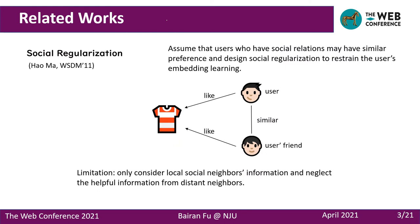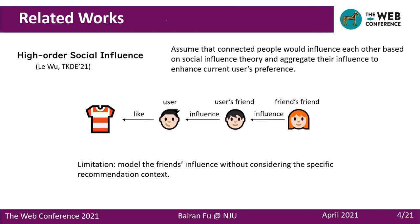To incorporate social relations into the recommender system, existing social-aware recommendation methods make several attempts in various ways. Social regularization methods assume that users who have social relations may have similar preferences. Thus, these methods consider social relations as a kind of social regularization to restrain the user-embedding learning process. High-order social influence methods consider that connected people would influence each other based on social influence theory, and aggregate friends' influence to enhance user preference.